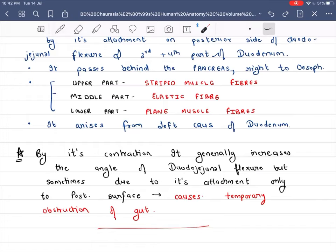But what happens when this cable is attached to the duodenojejunal flexure at the posterior part? It causes temporary obstruction in the gut because this cable is attached to the posterior surface of duodenojejunal flexure.